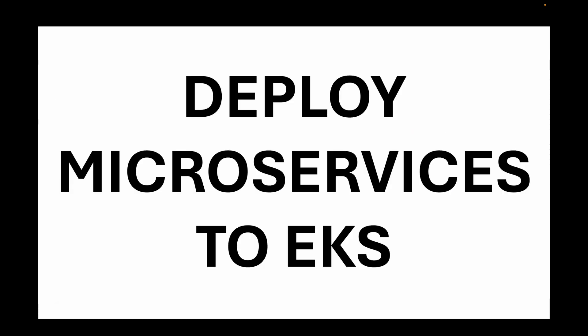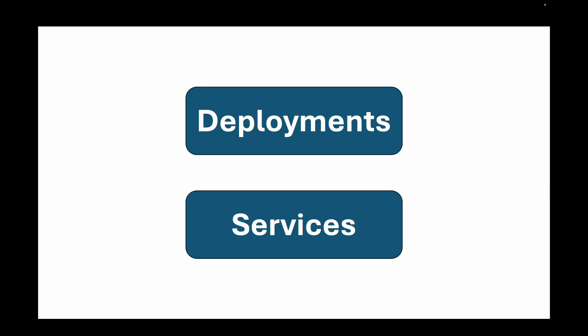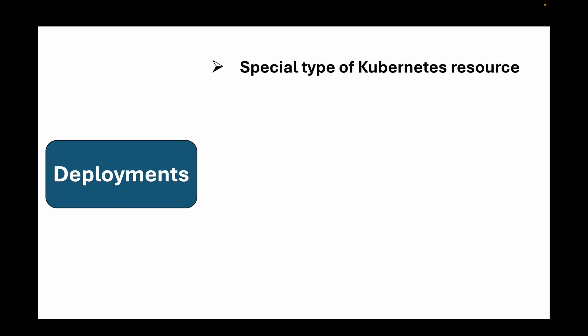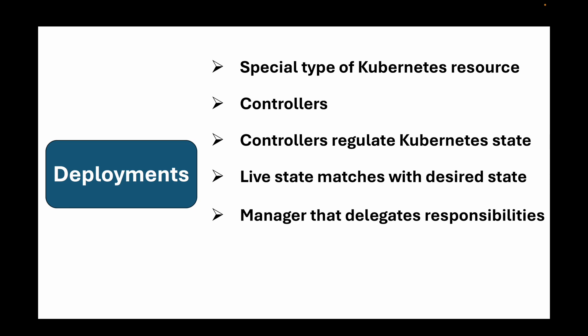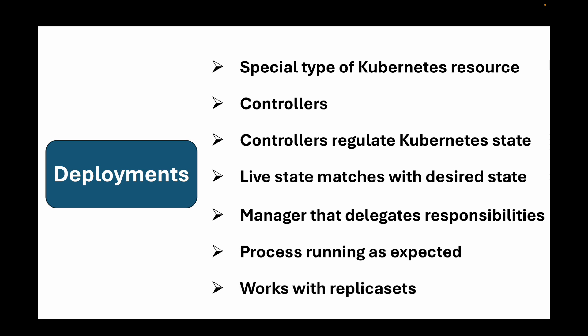To deploy the product and orders microservices we will require at least two different Kubernetes resources — a deployment and a service. A deployment is a special type of Kubernetes resource categorically known as controllers. Controllers help you to regulate the Kubernetes state by making sure the live state matches the desired state. More specifically, deployments can be compared to a manager that delegates responsibilities to make sure the container orchestration process is running as expected. Deployments work with replica sets to maintain the number of pods, and then replica sets in turn work with the pods.